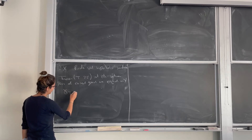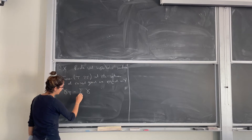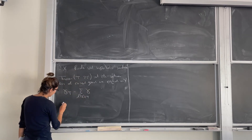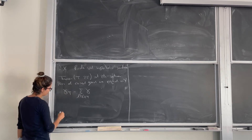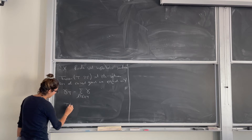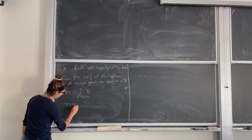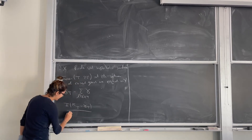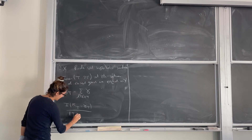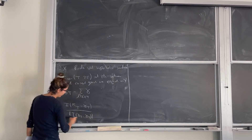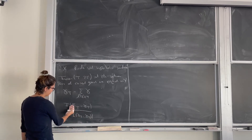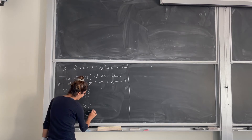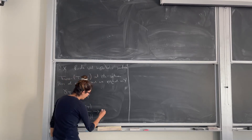We define gamma_t as the sum of all closed geodesics up to length t. The equidistribution says that if we consider the delta measure at the intersection points — which is exactly the measure I defined in the first part of the talk — and normalize by the total volume of this measure, which is just the intersection number of gamma_t itself, we want to show it converges to the uniform measure.